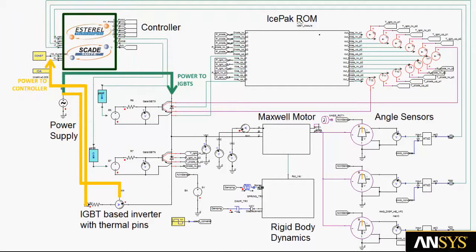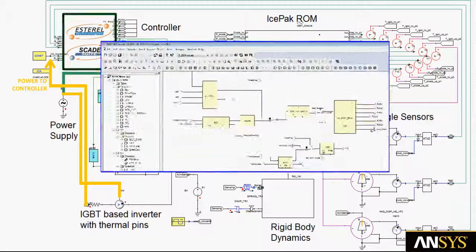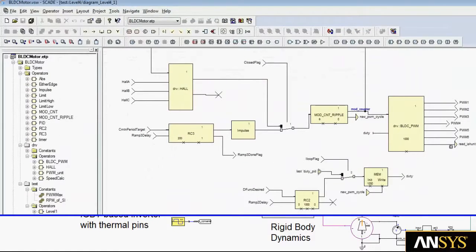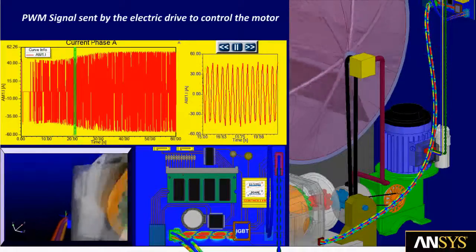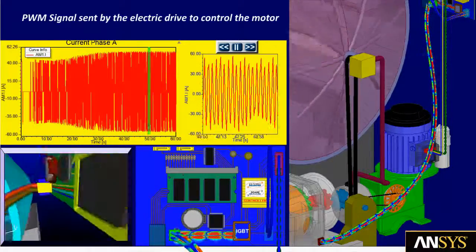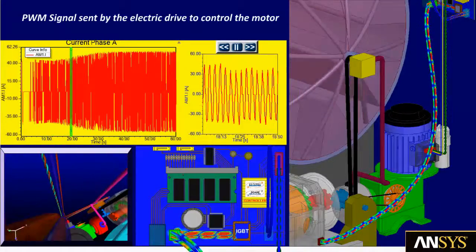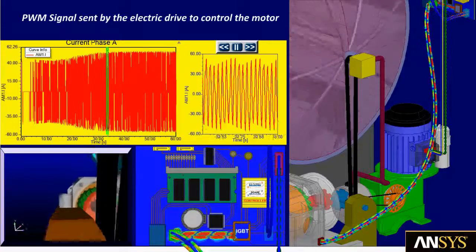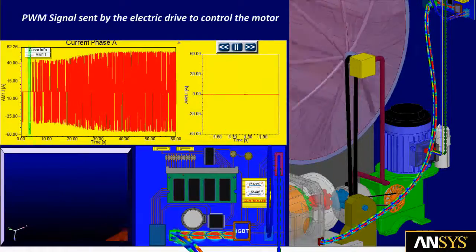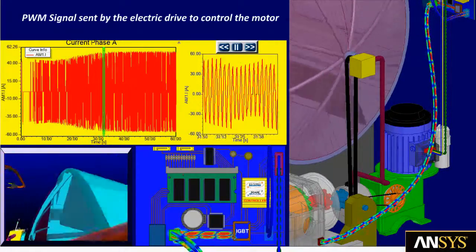The variable speed motor is controlled by an electric drive, in this case utilizing a controller with embedded code generated by the ANSYS SCADE suite. Here is the time domain output for one of the drive waveforms along with the electromagnetic simulation of the currents flowing in the cabling from printed circuit board to the electric motor. We use these waveforms in the electromagnetic simulation of the motor.